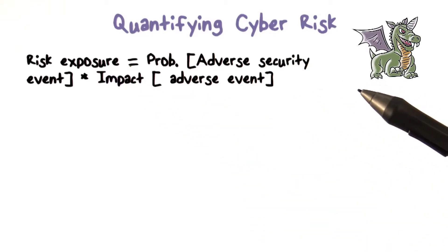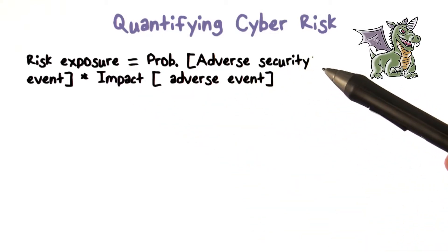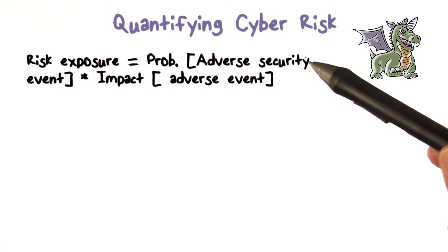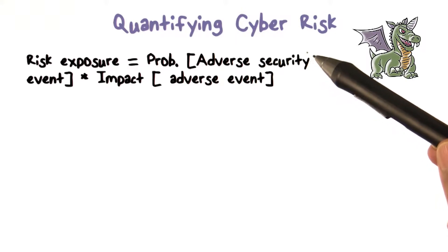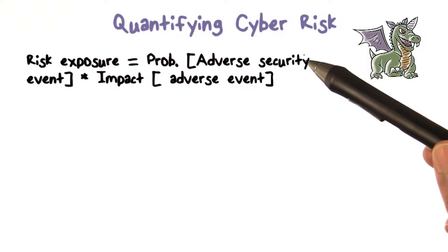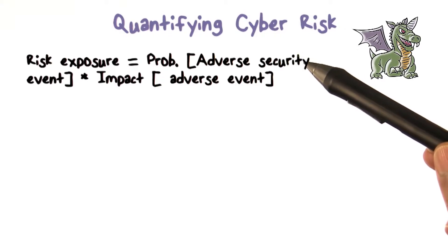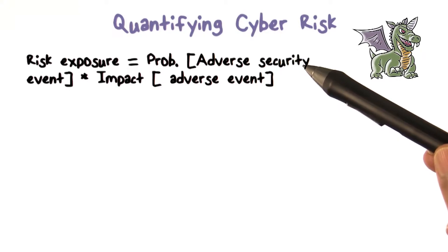If you talk about quantification, is there a formula for risk or the risk exposure that we have? Risk is really how likely — the probability of an adverse security event happening. There is a threat out there, they may come after me. I have some controls in place, but they may be able to get around them, and I might actually get compromised — experience a breach or whatever it is.